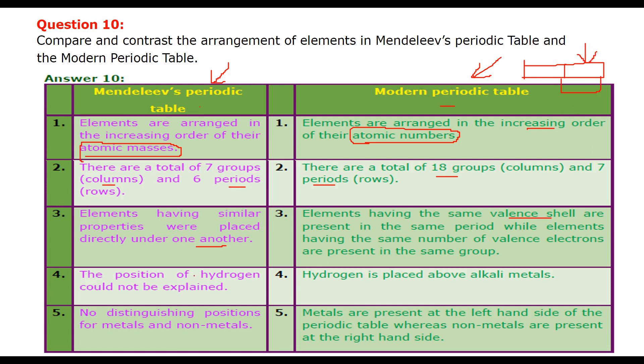In Mendeleev's, the position of hydrogen could not be explained. Hydrogen is placed above alkali metals in modern periodic table. In Mendeleev's, there is no distinguishing or no proper differentiation between the positions of metals and non-metal. But in modern periodic table, the left-hand side and right-hand side, that is, left-hand side are metals, LHS, and right-hand side are non-metals. This is RHS. So these are the differences between Mendeleev periodic table and modern periodic table.